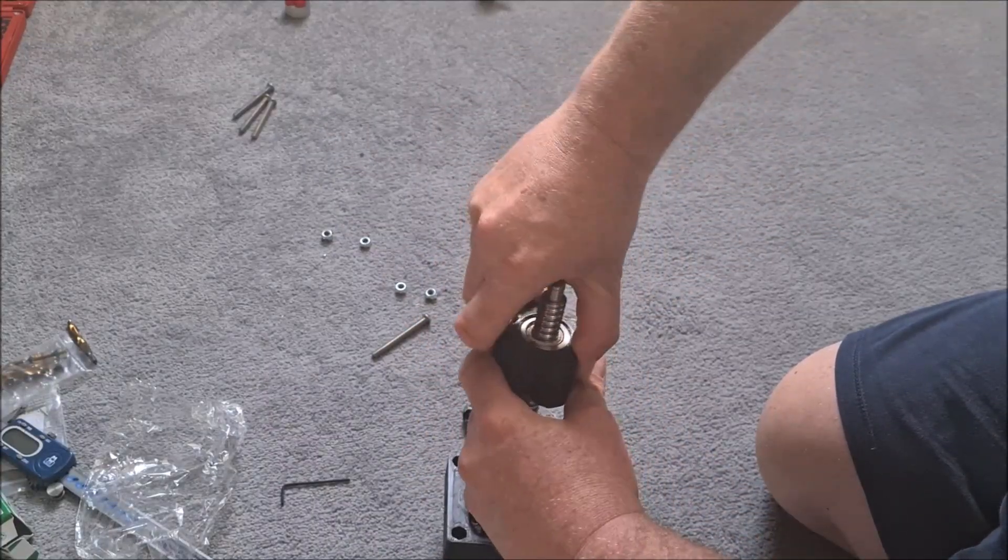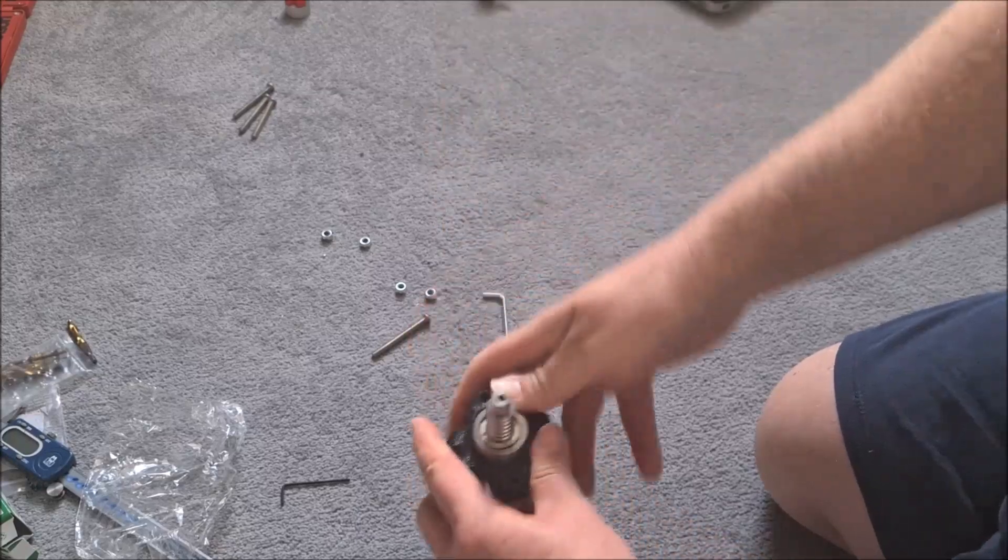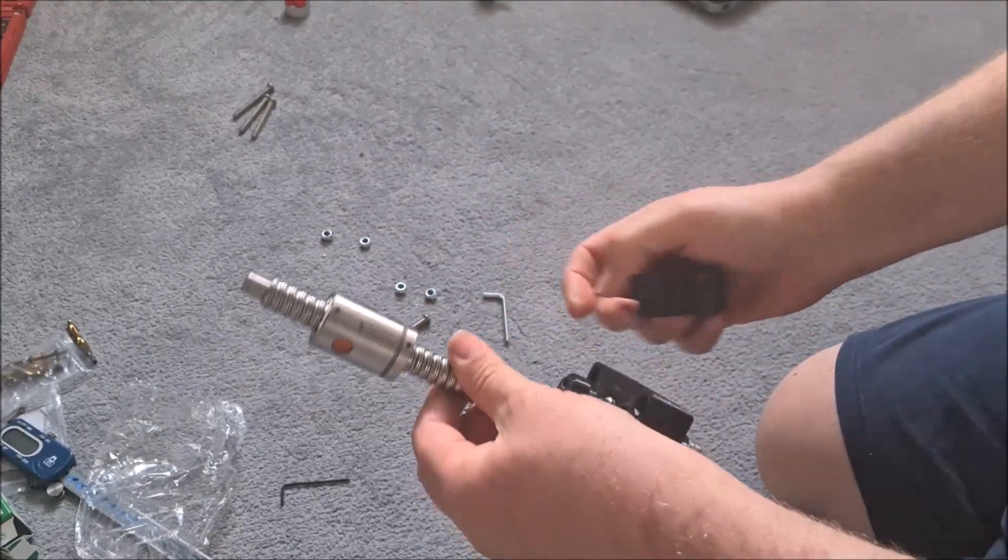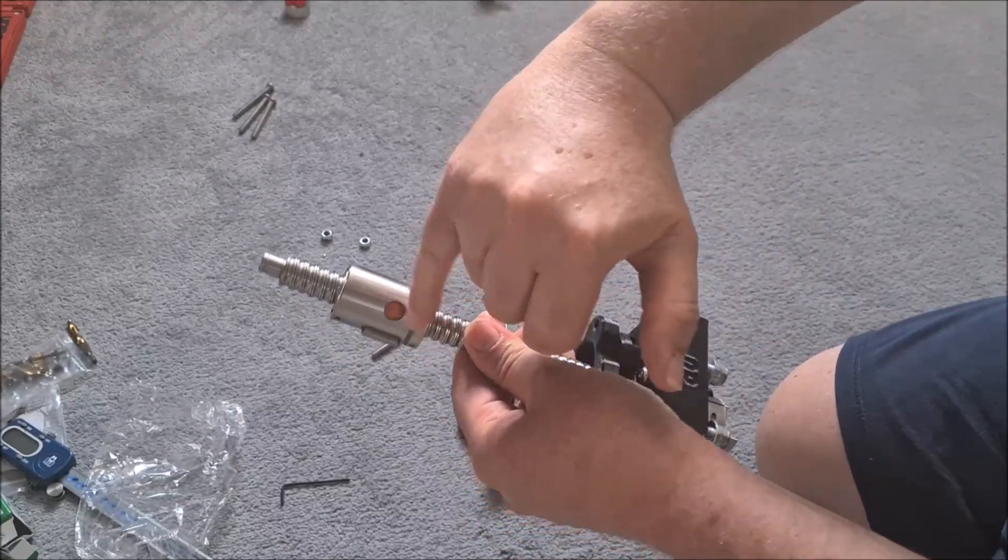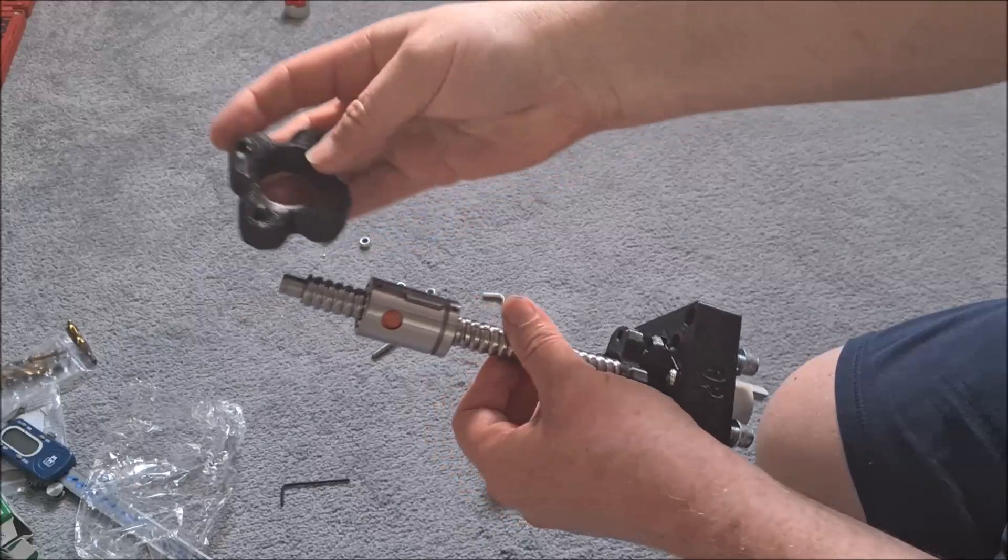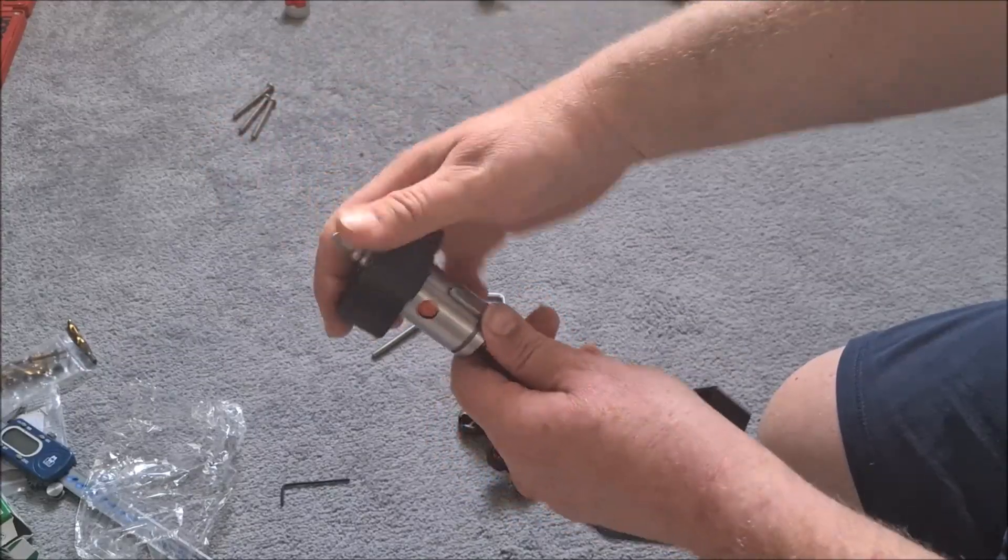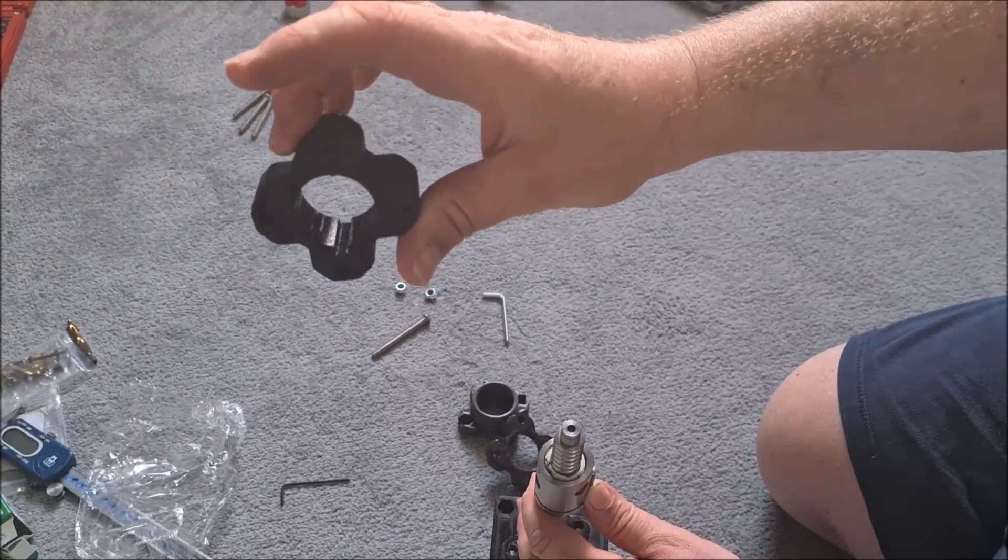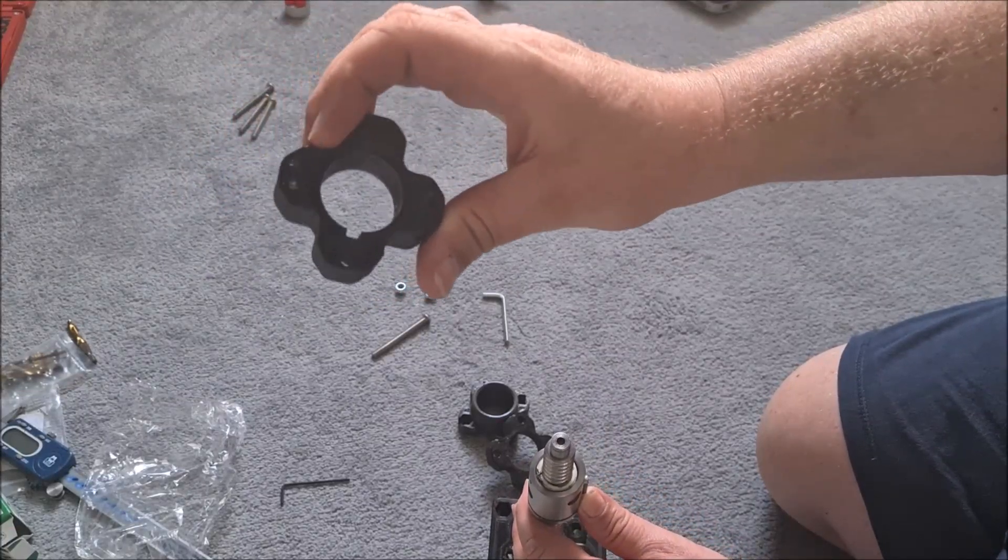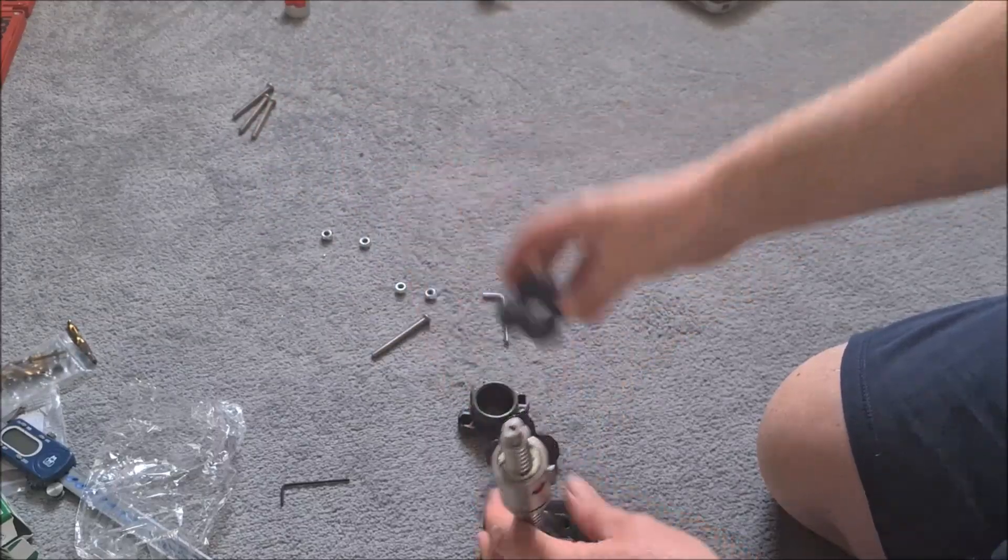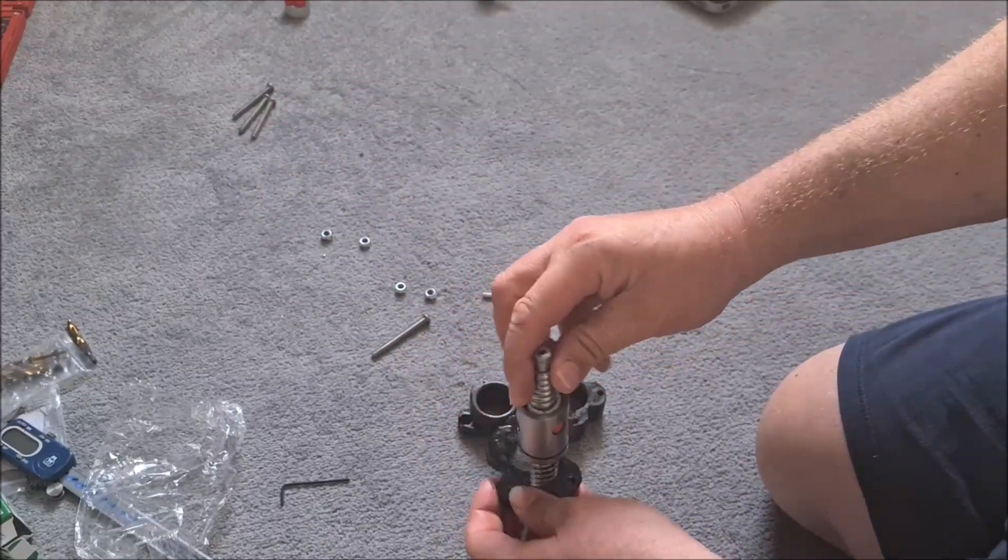If we pull these off, we can see that there's a key in the keyway that prevents the slider from rotating on the ball screw. And you can just about see there, hopefully, a keyway in the slider.